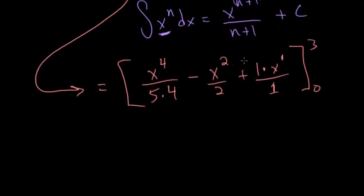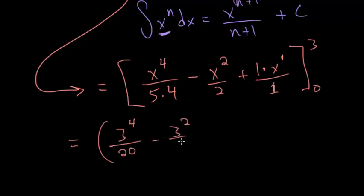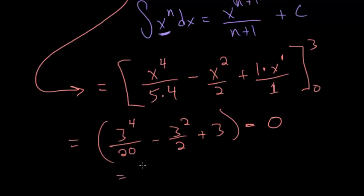We first plug in x = 3: we get 3⁴/20 minus 3²/2 plus 3. Then we subtract the expression evaluated at 0. But plugging in 0 gives 0 divided by some number for each term, which is all 0. So the expression at 0 is just 0. Now we simplify: 3⁴ = 81, giving 81/20 minus 9/2 plus 3.